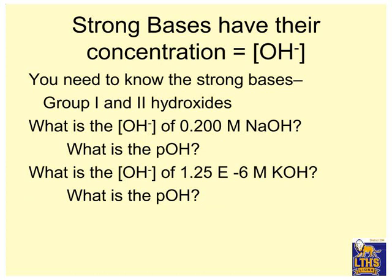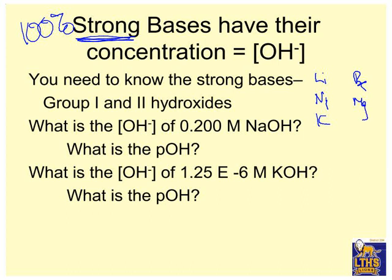Strong bases have their concentration equal their OH⁻. Strong bases dissociate 100%. Strong means 100%. You need to know your strong bases, which are group 1 and group 2 hydroxides. Your group 1 hydroxides start with lithium, sodium, potassium. Your group 2s would be beryllium, magnesium, and the ones that go down from there. Don't even think HOH — water — is a strong base. What is the OH⁻ concentration of 0.2 molar NaOH? That's strong, so OH⁻ equals 0.2 molar.